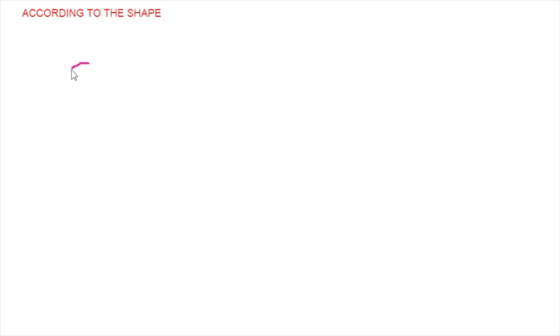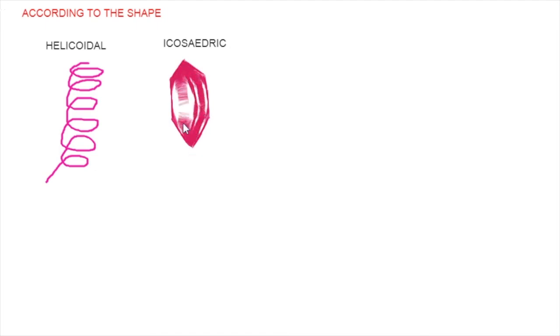Some viruses look like a cylinder made with a spiral. These are called helicoidal or helical. Leur boîte en protéines peut être un cylindre. Some others have a box that is completely closed and made out of lap pieces. These are called icosahedric.